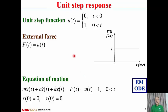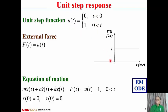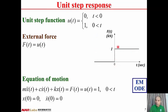Now we consider the unit step response. Before finding the unit step response, we consider the unit step function u(t) first. When T is less than zero, u(t) equals zero. When T is positive, u(t) equals one. There is a jump at T = 0, and the height of the jump is one step — therefore it is called the unit step function.